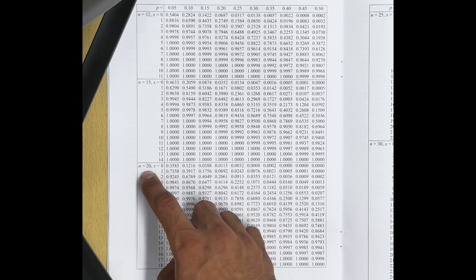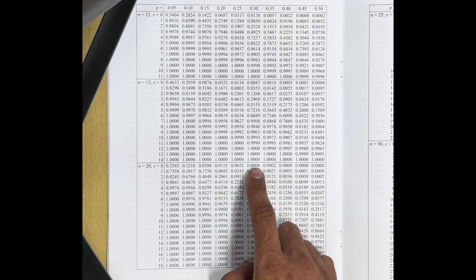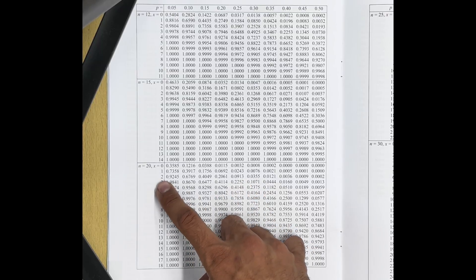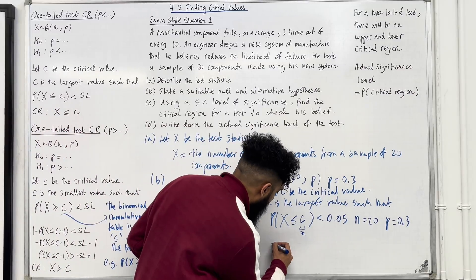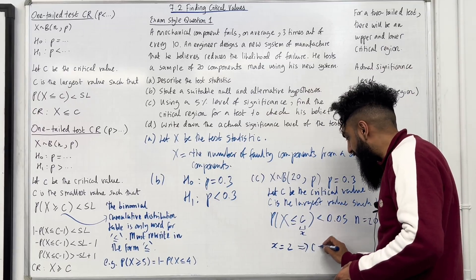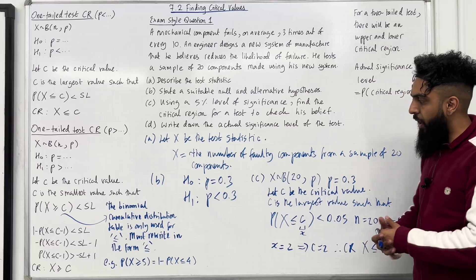Looking at N = 20 and the column P = 0.30, we find probabilities less than 0.05 for x = 0, 1, 2 — but the probability at x = 3 exceeds 0.05, so we stop. The critical value C corresponds to x = 2. Since C = 2, the critical region is X ≤ 2. That completes Part C.